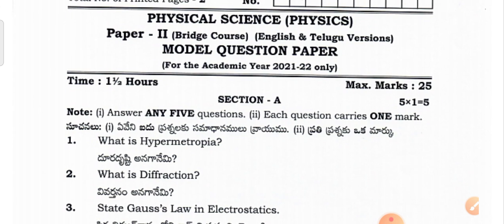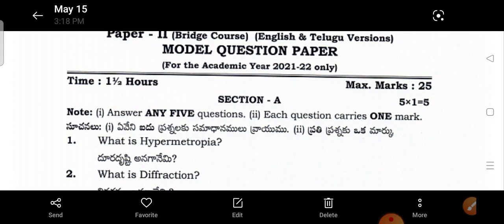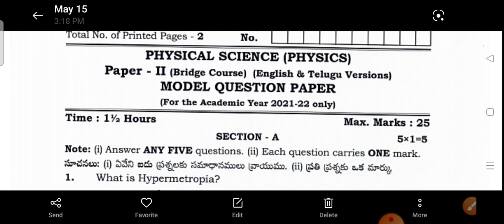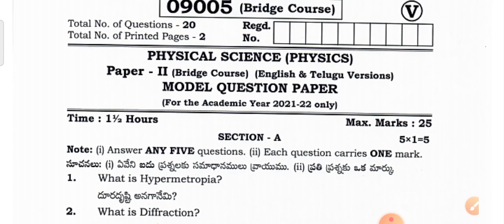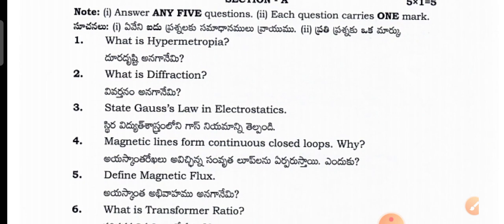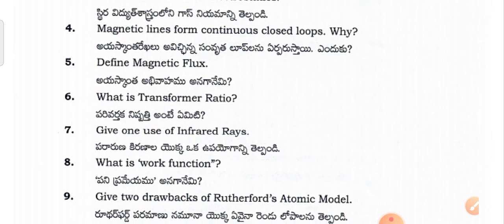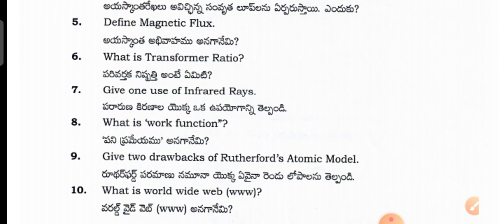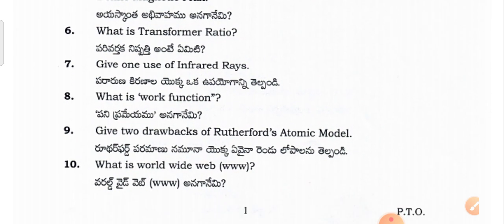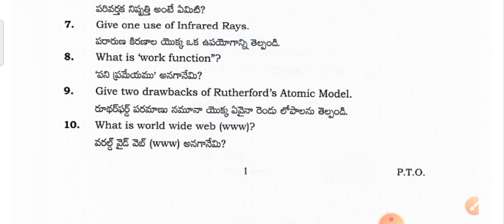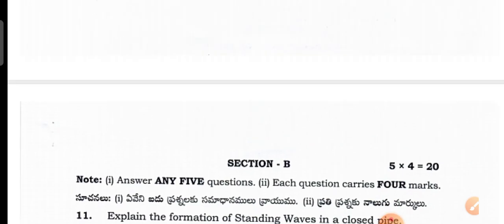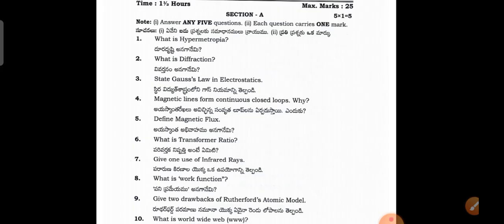In this video I would like to show the answers in English only for the English medium students in the subject of physics for the inter-vocational bridge course second year students in physical sciences. Section A questions include: hypermetropia, diffraction, gas law, magnetic lines, transformer ratio, uses of infrared, work function, drawbacks of Rutherford's atomic model, and World Wide Web. There are 10 questions in Section A.